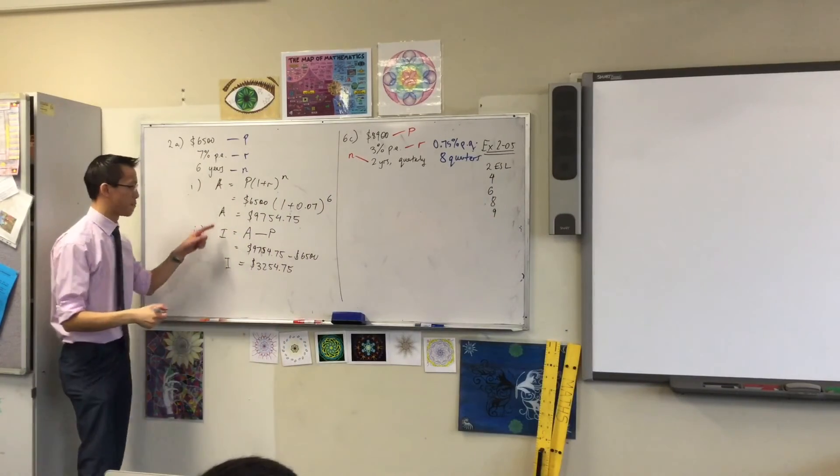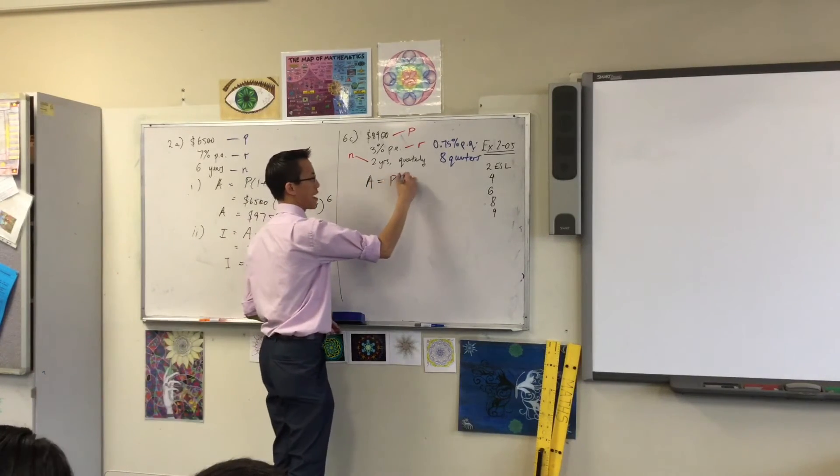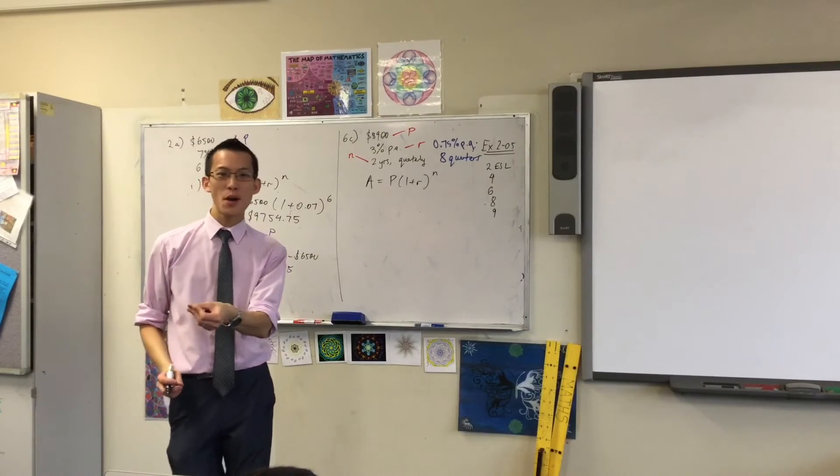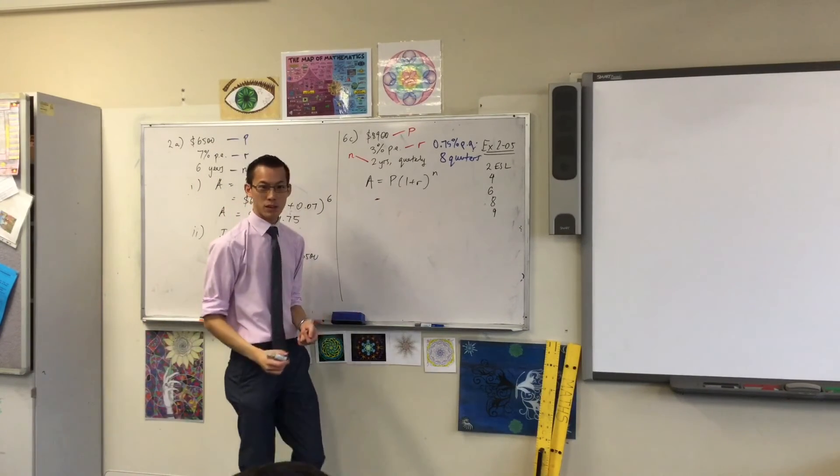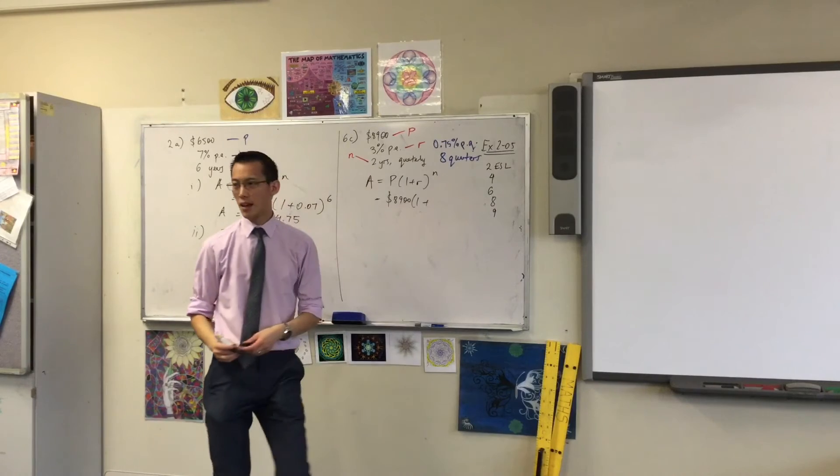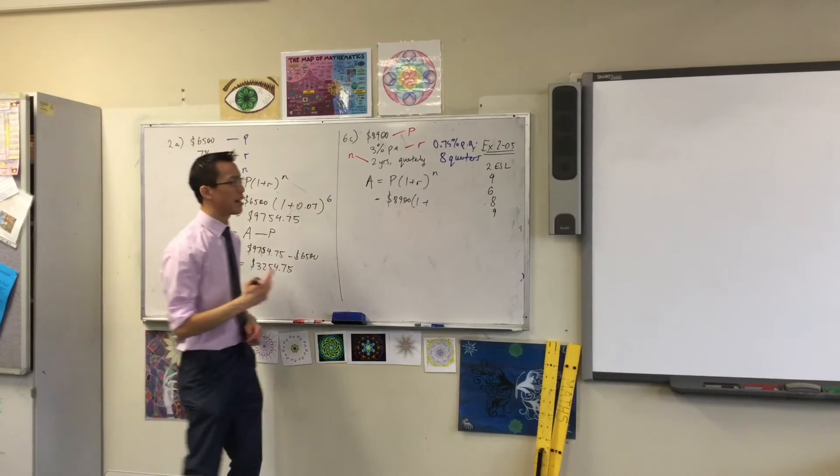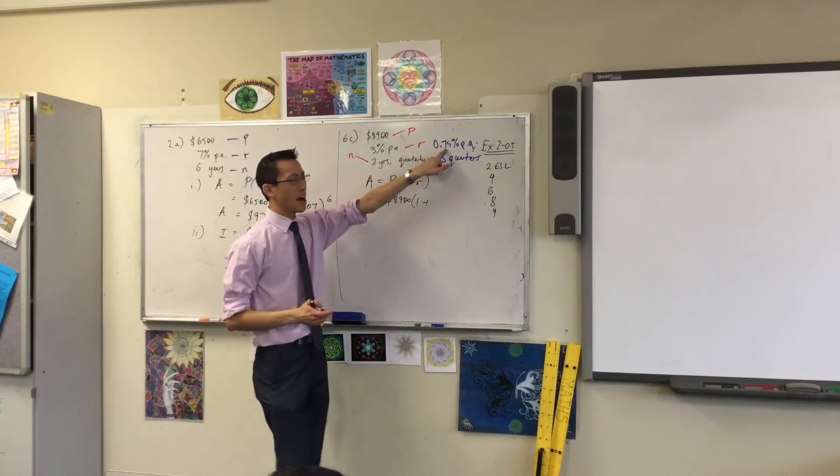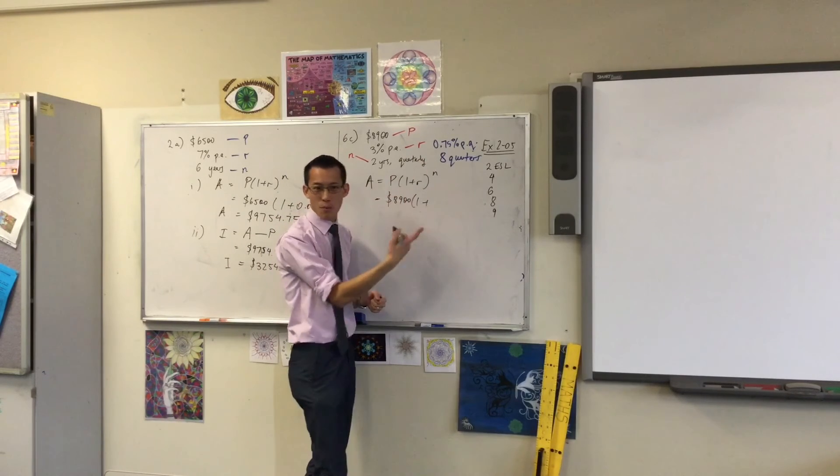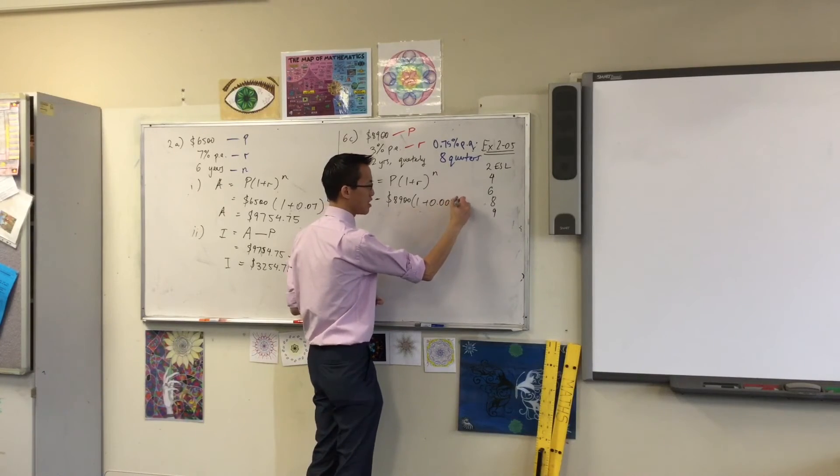Just like before, I'm going to write P outside of one plus R to the N. But, I've got to be careful to use the right rate and the right number of time periods. Principal at the front, that's still going to be 8,900. Now, the rate. Again, just like before, I'm going to convert this into a decimal. But, it's a bit tricky, right? How many decimal points am I going to move this thing to turn it into a decimal? Two, right? So, it's currently 0.75. So, I'm going to move it two places. So, it'll be 0.0075.